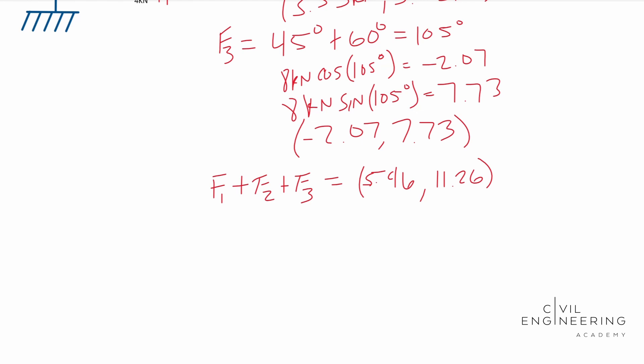To find the magnitude, we just need to think about a triangle. In this case, this is your FR, right, and then this is your Y and your X. That looks awfully familiar to the Pythagorean theorem, and that's exactly what we're going to do to solve for this. Your A squared plus your B squared equals your C squared, and in this case, your C squared is your force resultant. So we have R squared is equal to 5.46 squared plus 11.26 squared. Your R is equal to 12.5. That's your resultant force, kilonewtons.